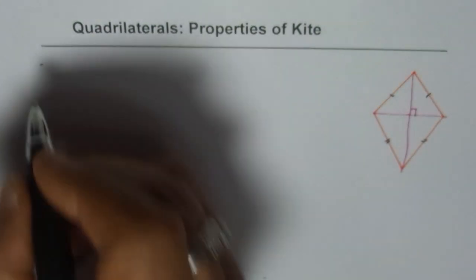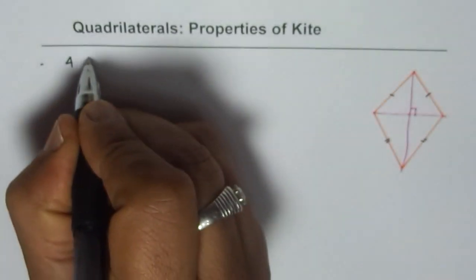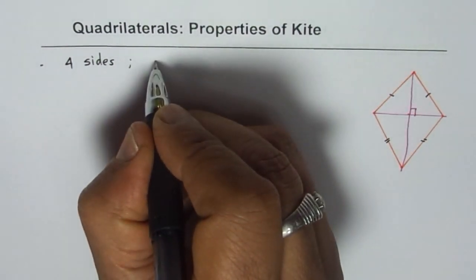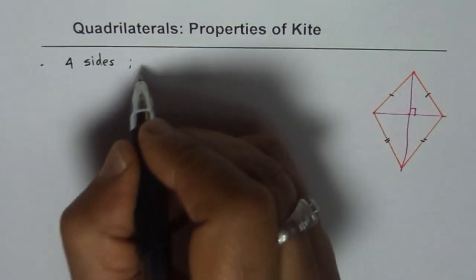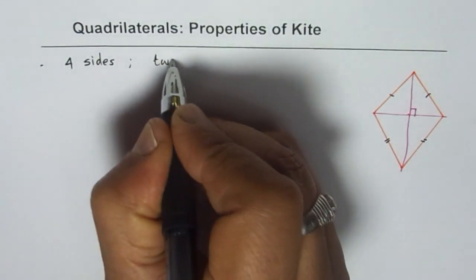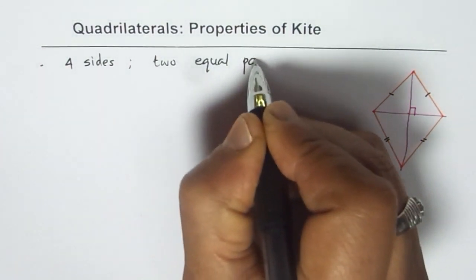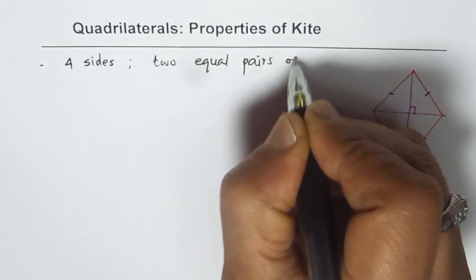starting with number of sides. So we have four sides since it is a quadrilateral. We have four sides and out of which we have two equal pairs. So adjacent sides are equal, two equal pairs.